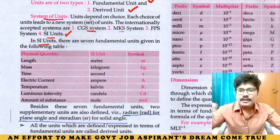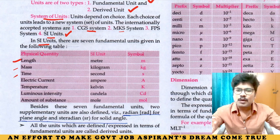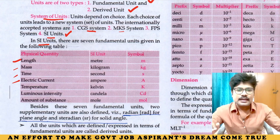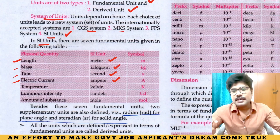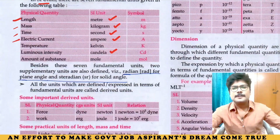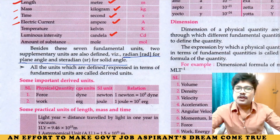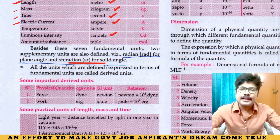Now, in SI units, the seven fundamental units are: Length, Mass, Time, Electric Current — these four are important — Temperature, Luminous Intensity, and Amount of Substance. Length: meter (m). Mass: kilogram (kg). Time: second (s). Electric Current: ampere (A). Temperature: kelvin (K). Luminous Intensity: candela (cd). There are also two supplementary units: Radian for plane angle, and Steradian for solid angle.